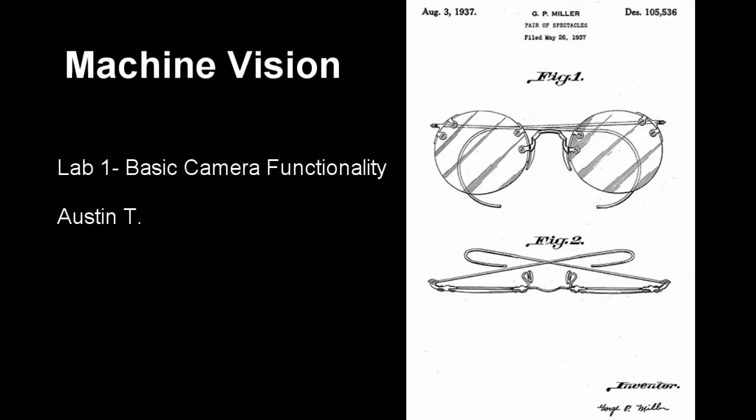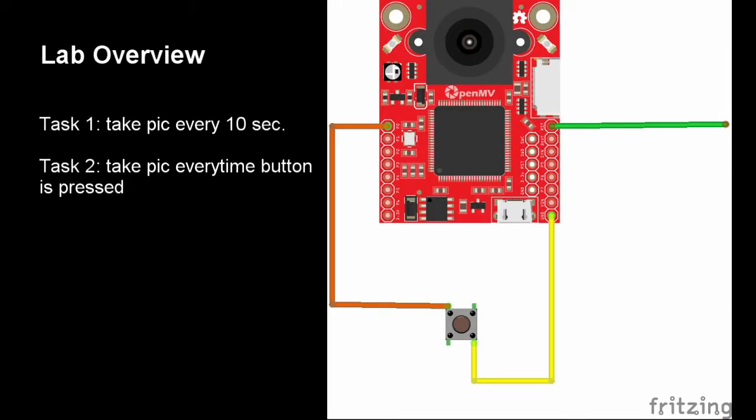Hi, this is Austin. This is Lab One for Machine Vision: Basic Camera Functionality. This lab will use the OpenMV H7. We will do two tasks. The first task will be to program the OpenMV to take a picture every 10 seconds and store it on the SD card. The second task will be to take a picture every time a button is pressed and store it on the SD card.